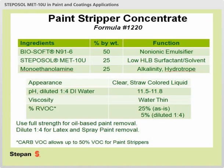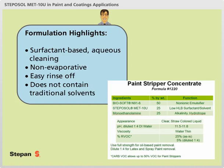Here is an example of a paint stripper concentrate formulation. This formulation contains Biosoft N91-6, a linear alcohol ethoxylate, Steposol Med10U, and monoethanolamide. This formulation can be used at full strength for oil-based paint removal and can be diluted 1-to-4 for latex and spray paint removal. As additional formulation highlights, this formulation is surfactant-based and provides aqueous cleaning, is non-evaporative, is easy to rinse off, and does not contain traditional solvents.